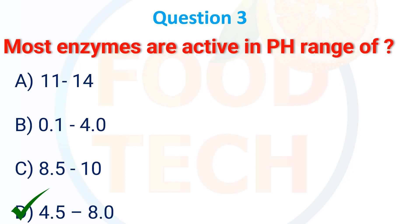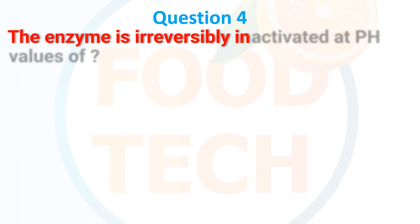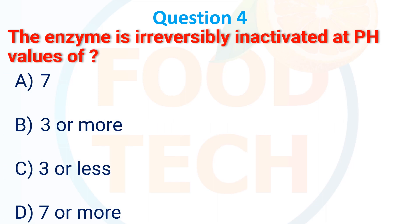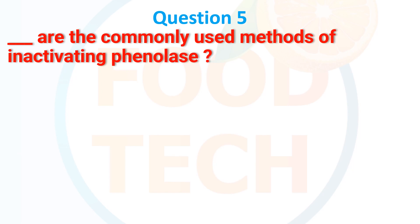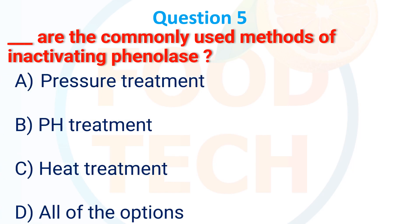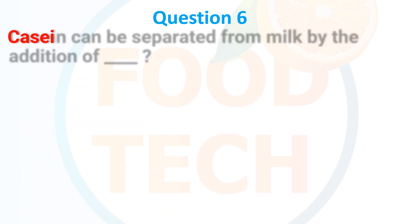The enzyme is irreversibly inactivated at a pH value of: A. 7, B. 3 or more, C. 3 or less, D. 7 or more. The answer is C. 3 or less. The commonly used method of inactivating enzymes is: A. Pressure treatment, B. pH treatment, C. Heat treatment, D. All of the options. The answer is C. Heat treatment.